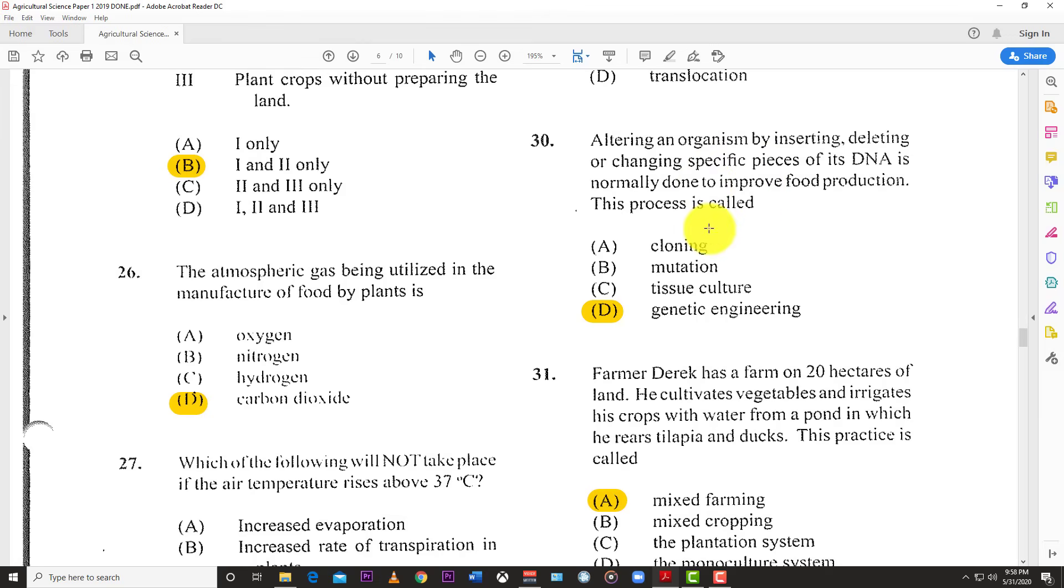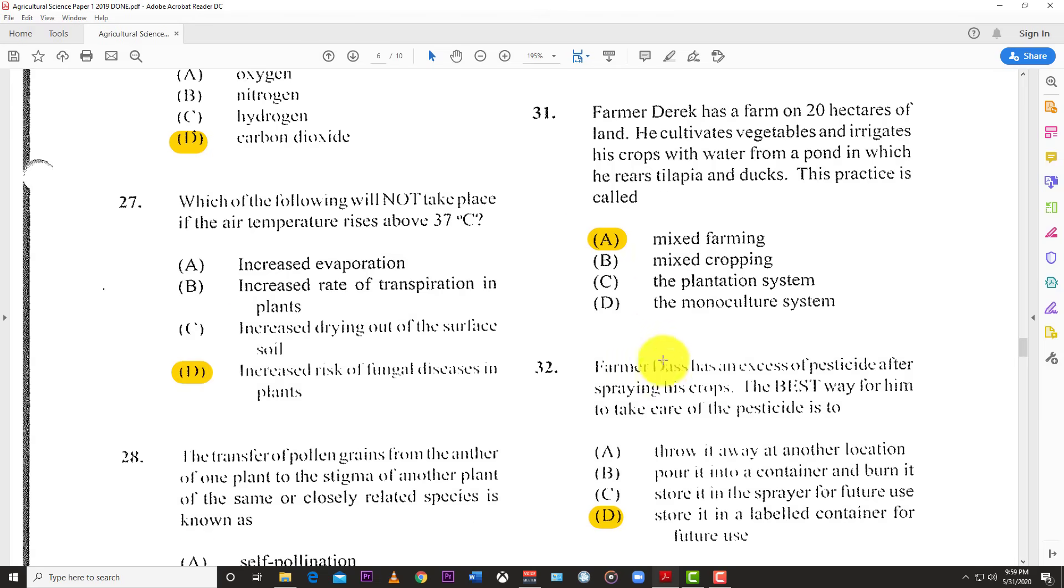Number 30: Altering an organism by inserting, deleting, or changing specific pieces of its DNA to improve food production is called genetic engineering. Number 31: Farmer Derek has a farm on 20 acres of land. He cultivates vegetables, irrigates his crops with water from a pond in which he raises tilapia and ducks. This practice is called mixed farming - both livestock and plant production.